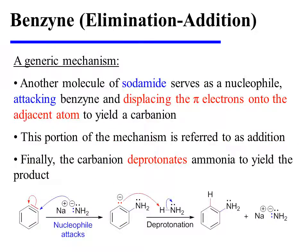Another molecule of sodamide then serves as a nucleophile, attacking benzyne and displacing the pi electrons onto the adjacent atom. This yields a carbanion intermediate, and this portion of the mechanism is referred to as addition. Lastly, the carbanion deprotonates ammonia to yield the product. In this case, the product is aniline.